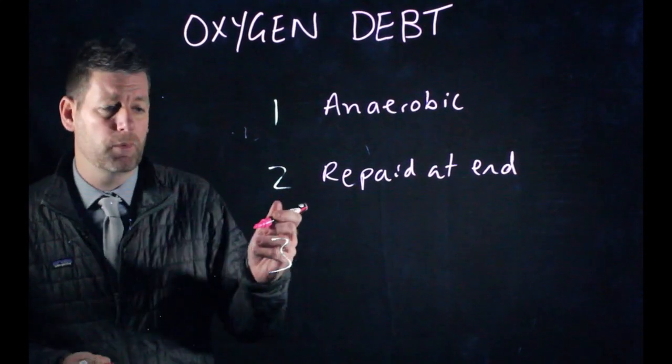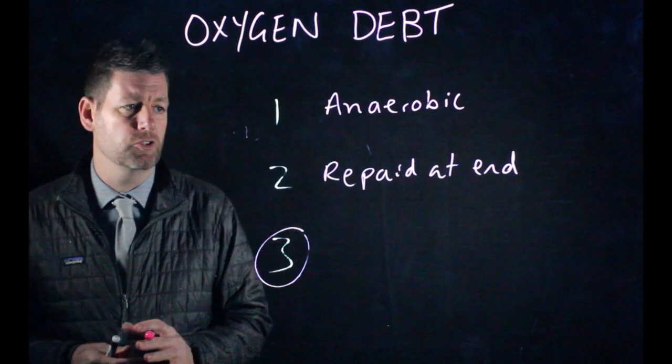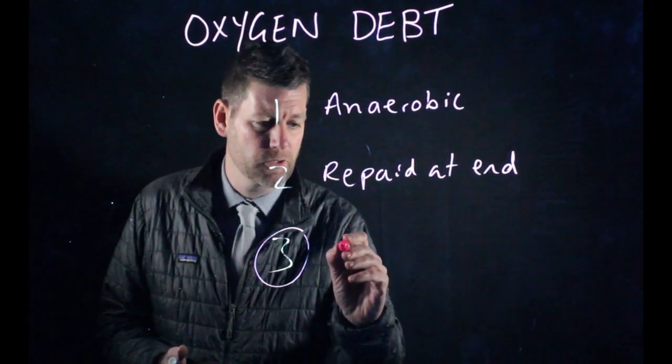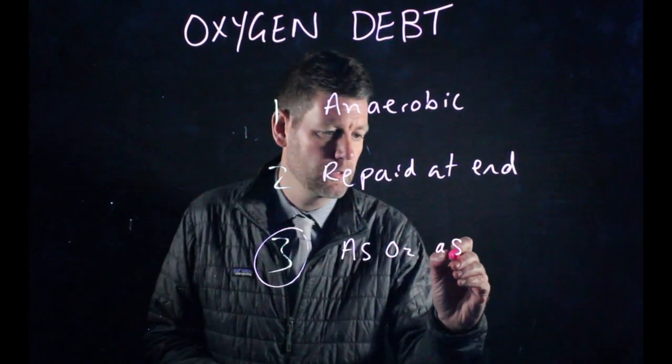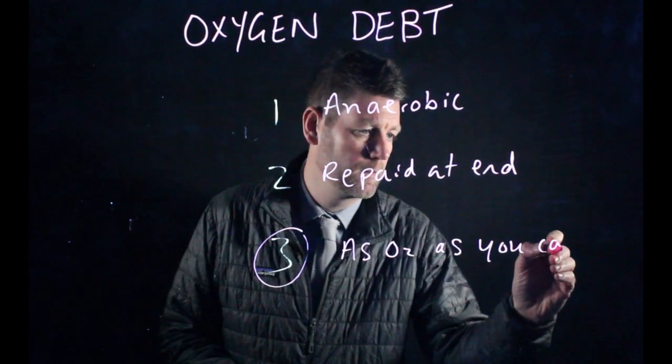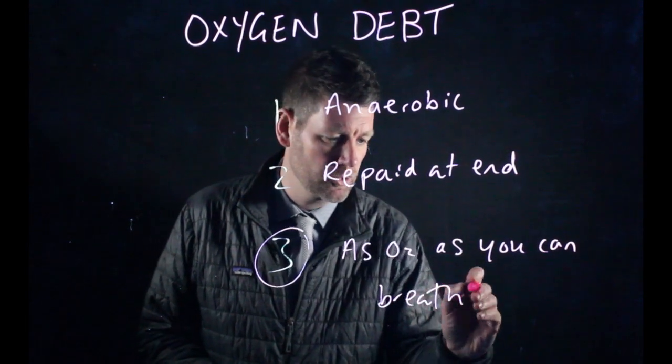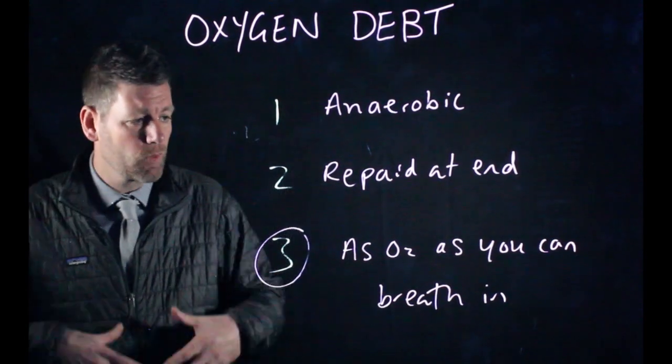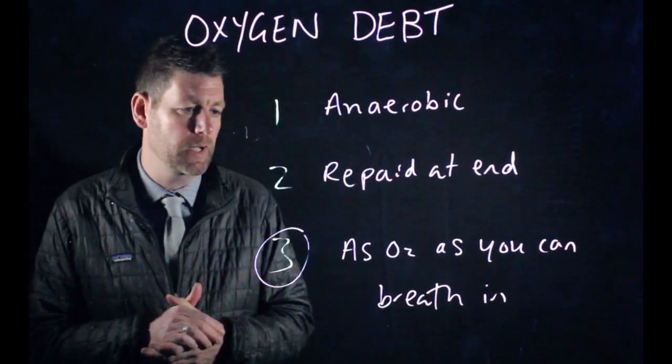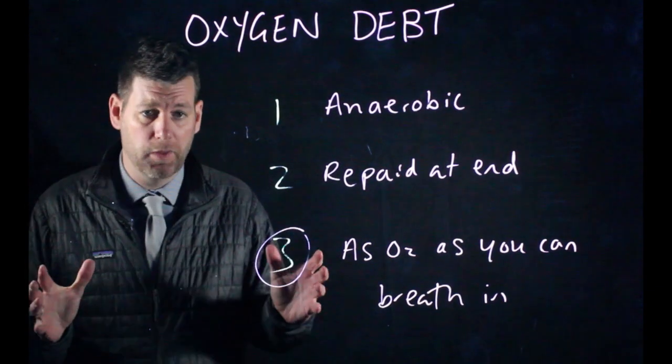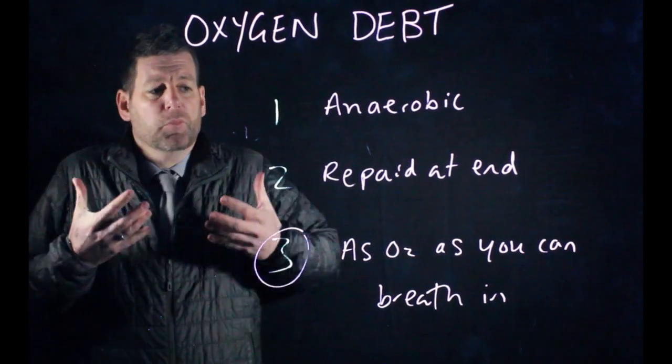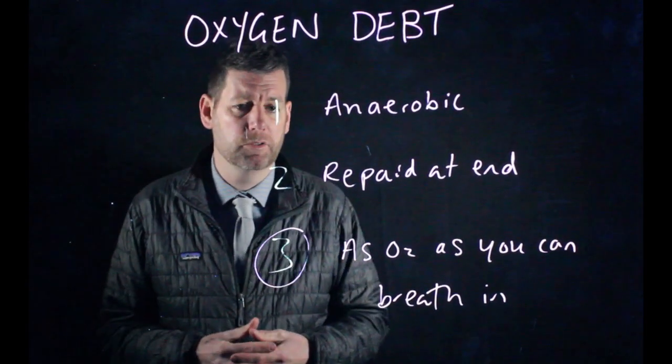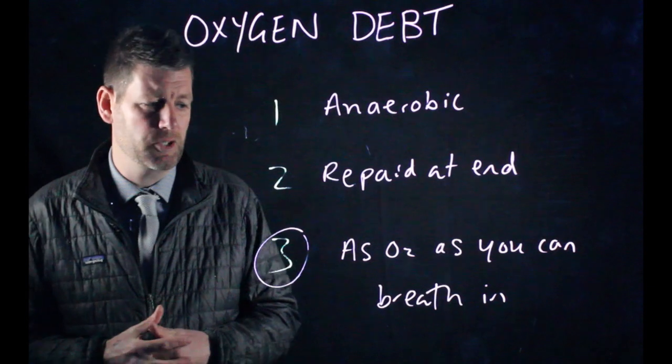And this one's really important. This third mark is something that people often get wrong with oxygen debt. It's kind of as much oxygen as you can breathe in. So what will happen, if I just show you behind the glass here, is a runner will run their event and they'll do it as fast as they can at the top of their ability, maximum ability, and then they'll stop. The minute they stop, they take huge breaths of oxygen in. And that's the oxygen debt. That's the debt that you owe your body in terms of oxygen. That's what you're trying to replenish back into the system.